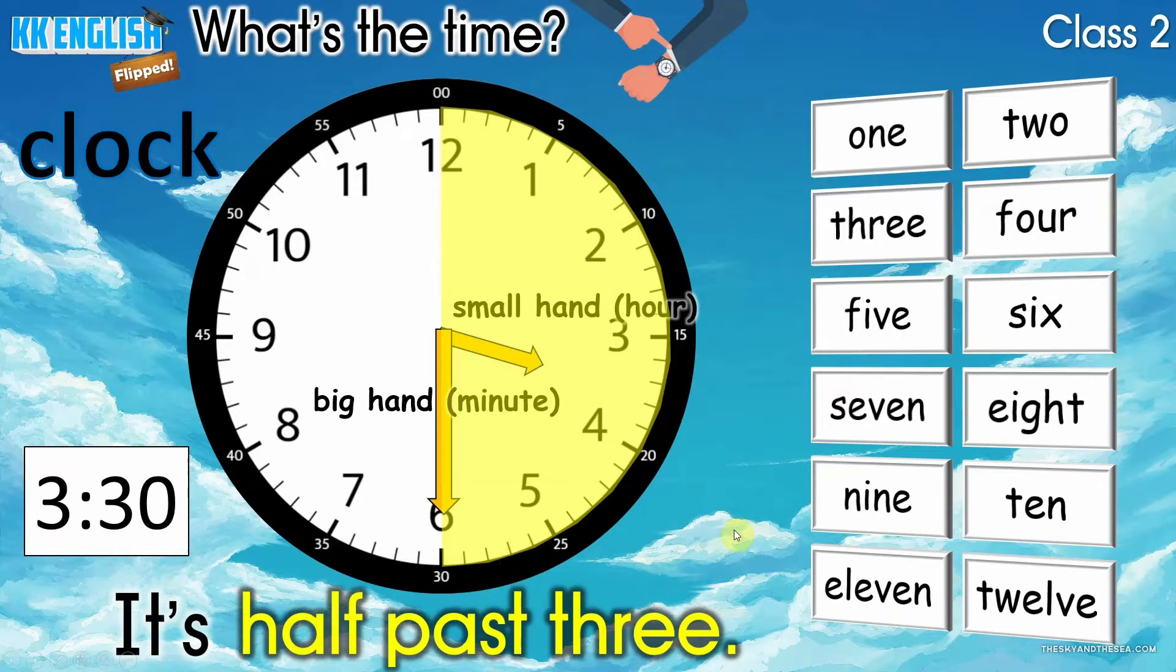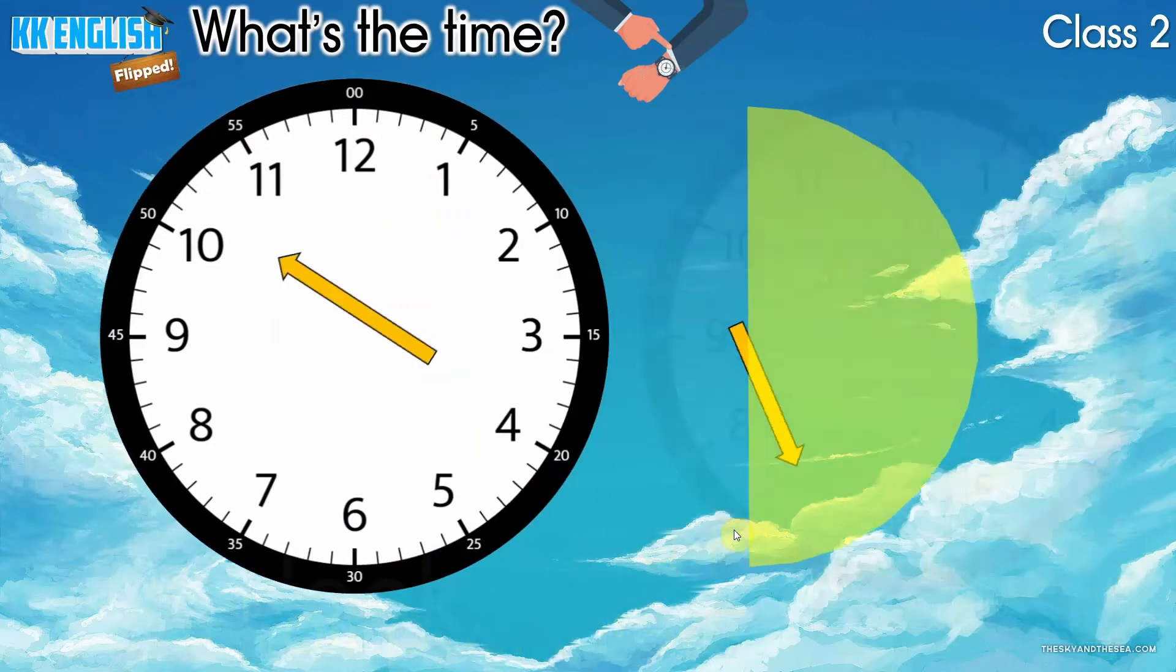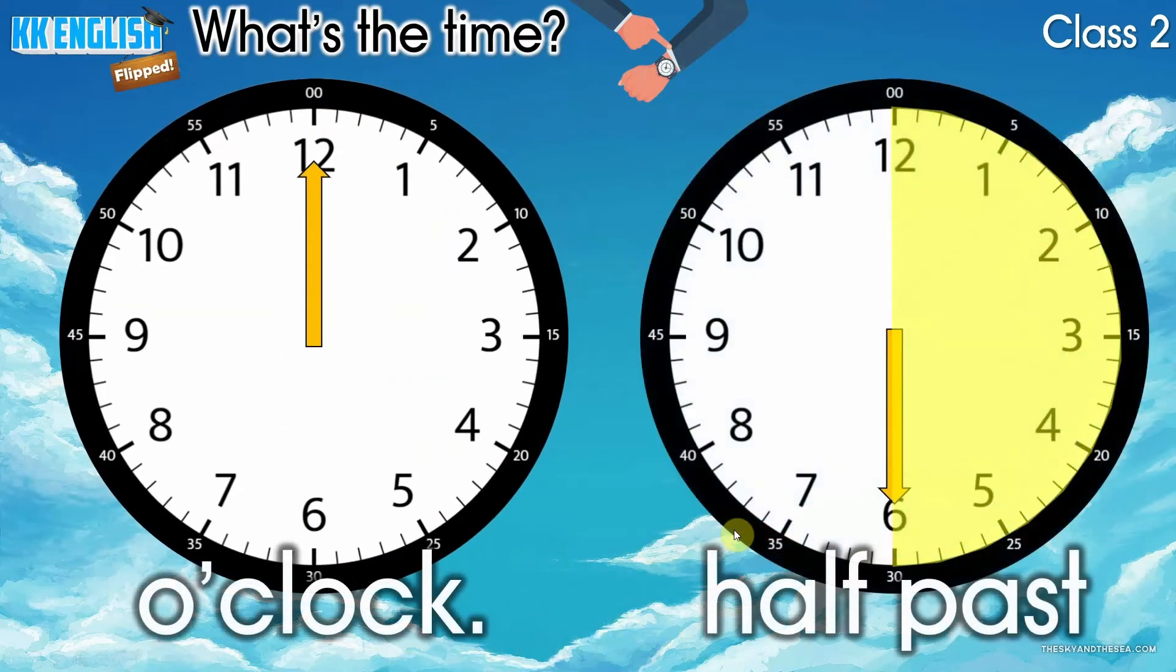Remember? Let's try some clocks. Look at this note. 看一下这个笔记先哦. When the big hand touches 12, 当分针碰到12的时候, we say o'clock. O'clock. 我们说正点. 正点. When the big hand touches six, 当分针碰到6的时候, we say half past. Half past. 我们说三十分,或者过了一半.